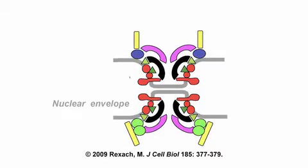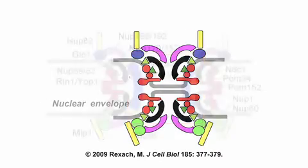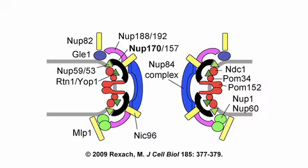Lu and Kirchhausen are both now interested in investigating the details of post-mitotic nuclear pore reassembly. Lu, now establishing his own lab at Nanyang Technological University in Singapore, wants to generate a clearer molecular picture of how the nuclear pore complex makes a hole in the intact nuclear envelope membrane. This must involve a fusion mechanism between the outer and inner nuclear membranes — a process that remains poorly understood.